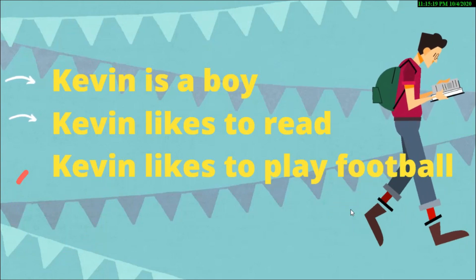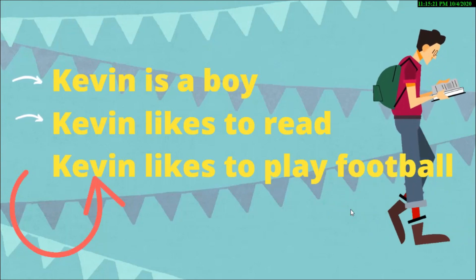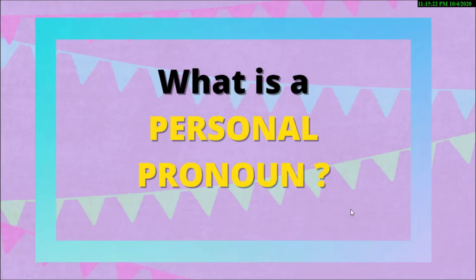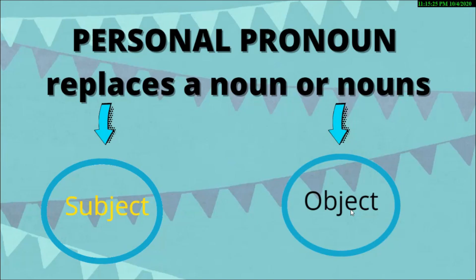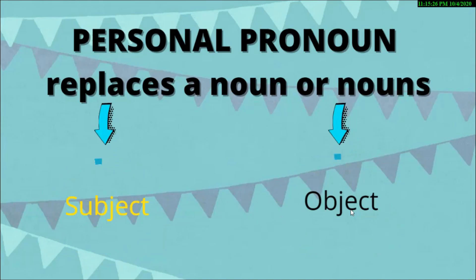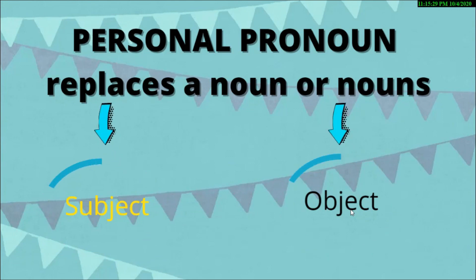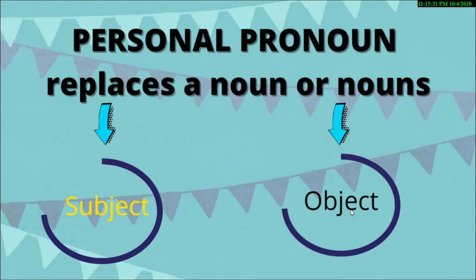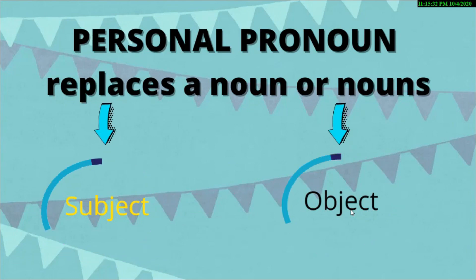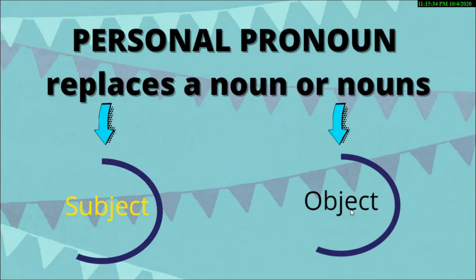We'll come back to this in a few minutes. But first, what's a personal pronoun? A personal pronoun replaces a noun or nouns in a sentence. There are two kinds of personal pronouns: subject and object.